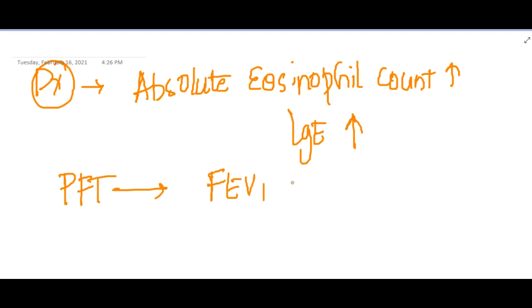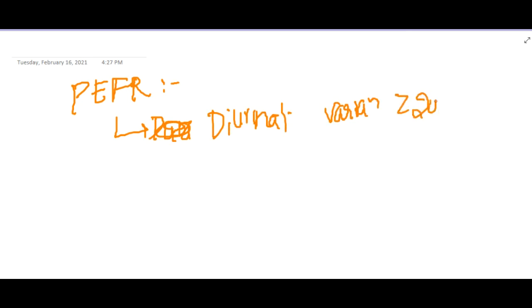FVC ratio will be elevated, so FEV1 by FVC ratio is approximately less than 0.8. And if you do peak expiratory flow rate, this peak expiratory flow rate shows a diurnal variation of more than 20 percent.